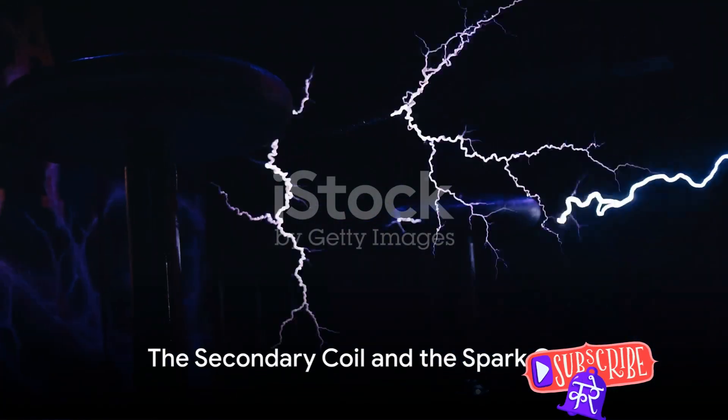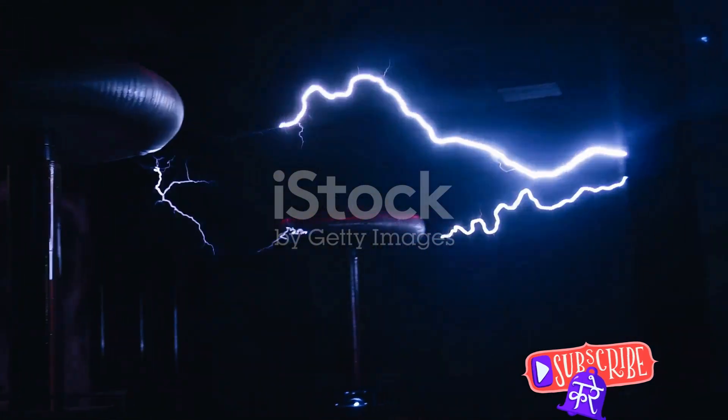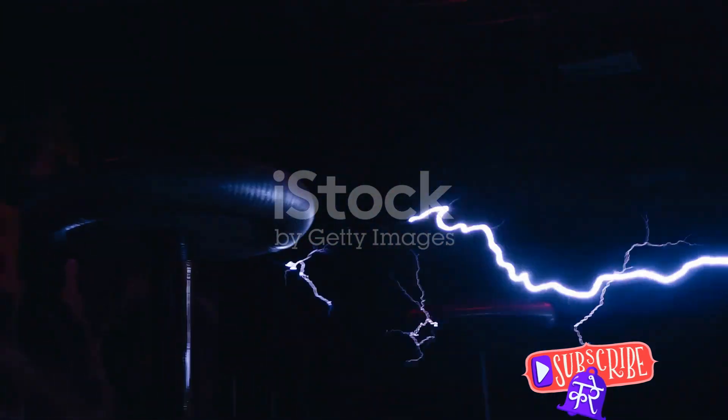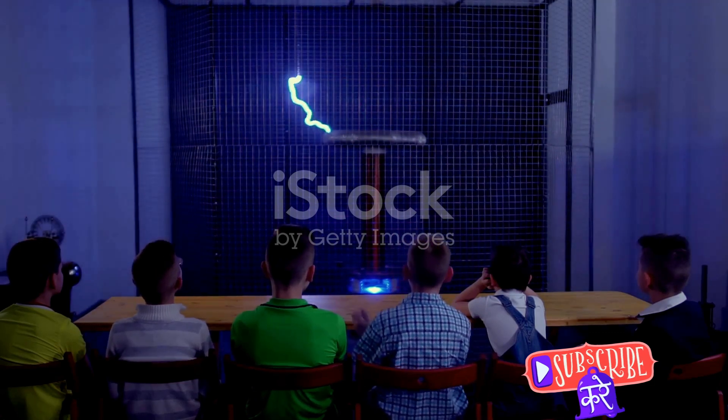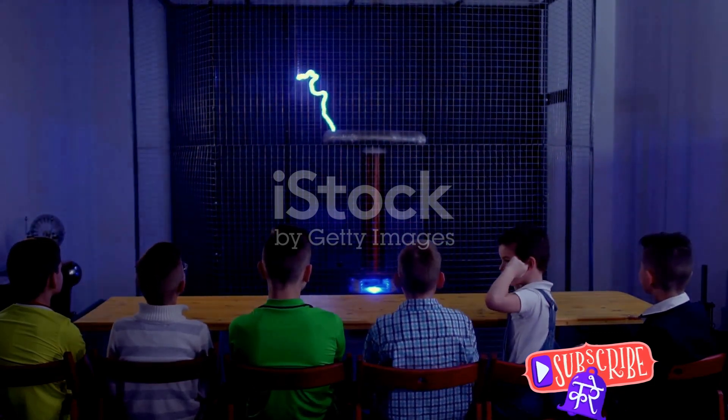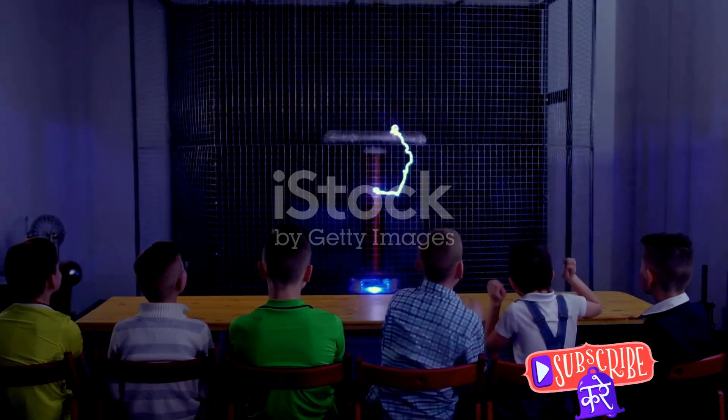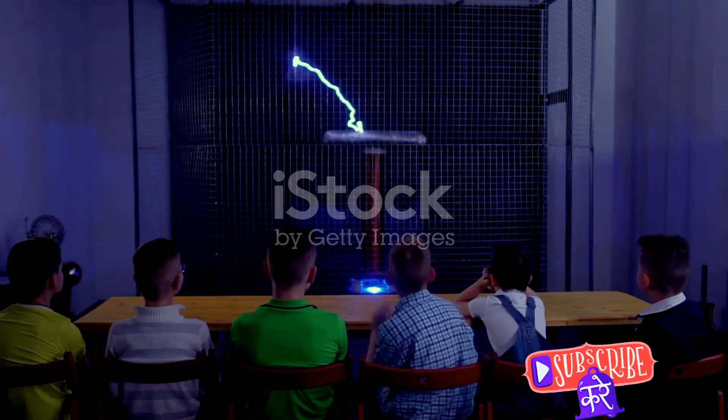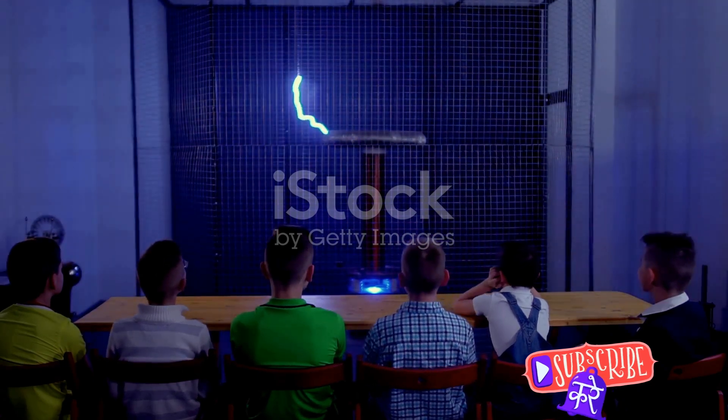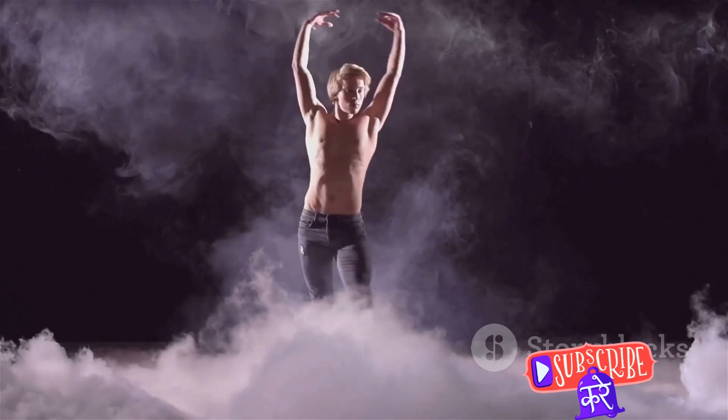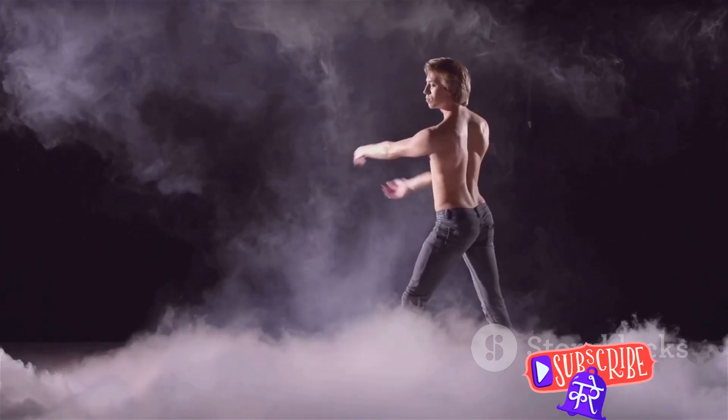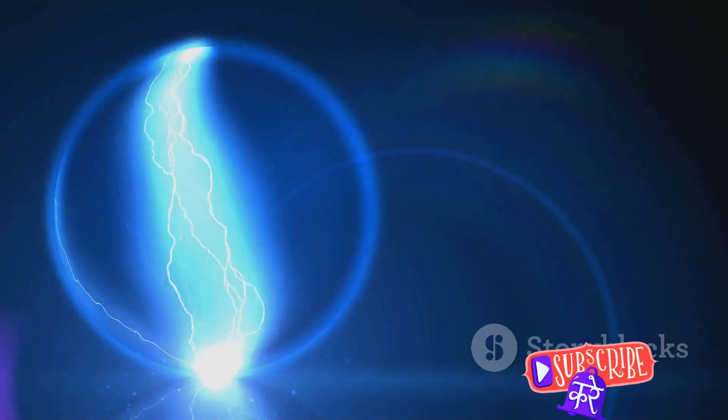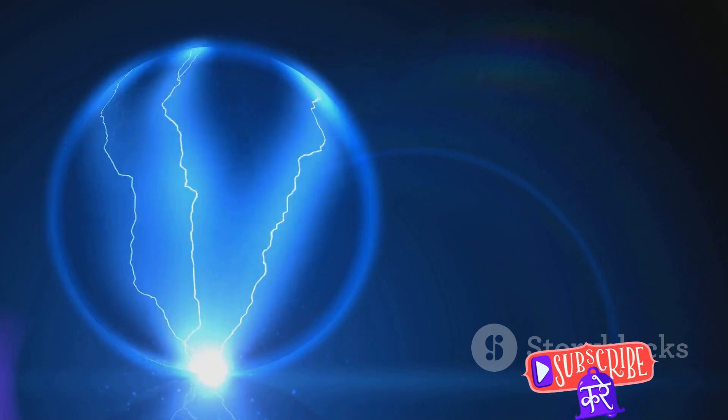But what happens next is even more intriguing. The magic really begins with the secondary coil and the spark gap. The secondary coil, a longer winding of wire, is situated within the magnetic field of the primary coil. This positioning is no accident. It's the crux of the Tesla coil's operation. As the primary coil pulses with electricity, it creates a fluctuating magnetic field around it. The secondary coil, residing within this magnetic field, becomes a recipient of this energy. Picture it like a dance, where the primary coil leads and the secondary coil follows, each step in perfect harmony.